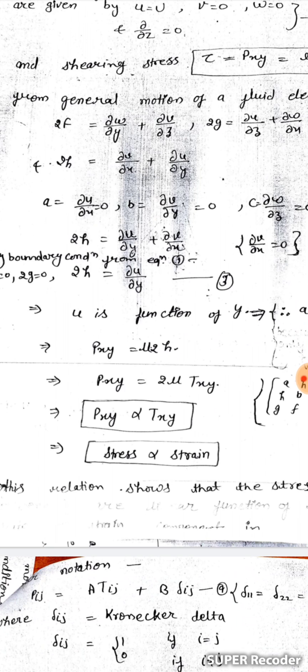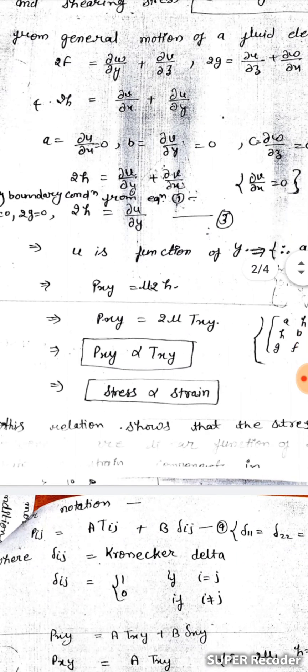Because u is a function of y, Pxy = 2*mu*h. Then Pxy = 2*mu*Txy, so Pxy is proportional to Txy. Here Pxy is the stress component in the x-direction and Txy is the strain rate component in the x-direction. This shows that the stress is proportional to the strain.